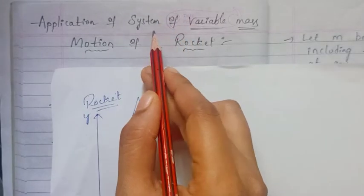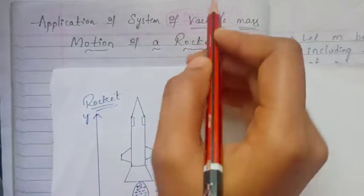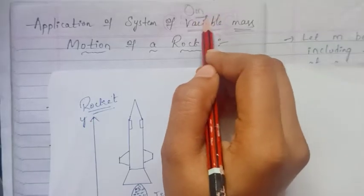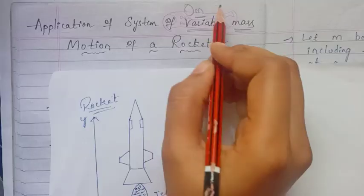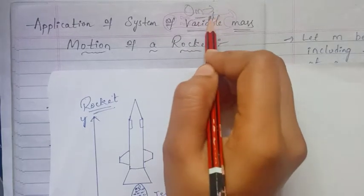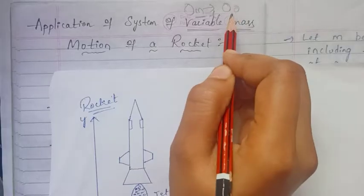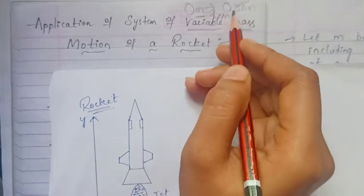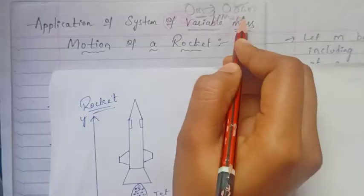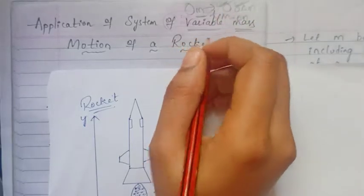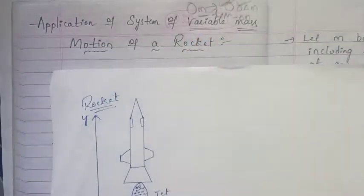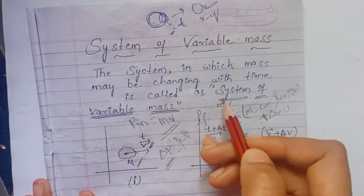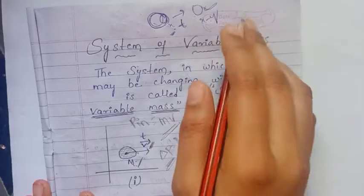Basically, I am going to discuss questions about the system of variable mass. The system in which mass may be changing with time is called the system of variable mass.